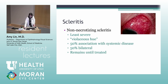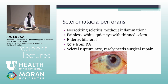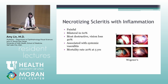Necrotizing scleritis with inflammation is painful, bilateral in most cases, and the most destructive type — with vision loss in 40%, high association with systemic vasculitis, and a 20% mortality rate at five years. So it's really important to diagnose this so treatment can be started. Scleral rupture does need systemic immunosuppression, which should be discussed further. Because of the high mortality, diagnosing necrotizing scleritis promptly is critical.